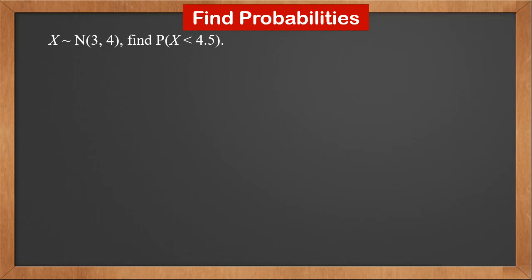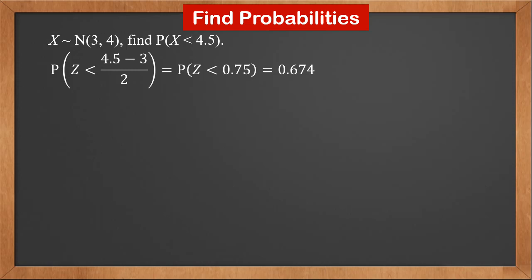Here, mu is 3 and sigma is 2. Applying x minus mu over sigma on both sides of X less than 4.5, since x minus mu over sigma is z, this becomes P(Z less than 4.5 minus 3 over 2), that is P(Z less than 0.75). By looking it up in the z-table, we get the answer as 0.674.